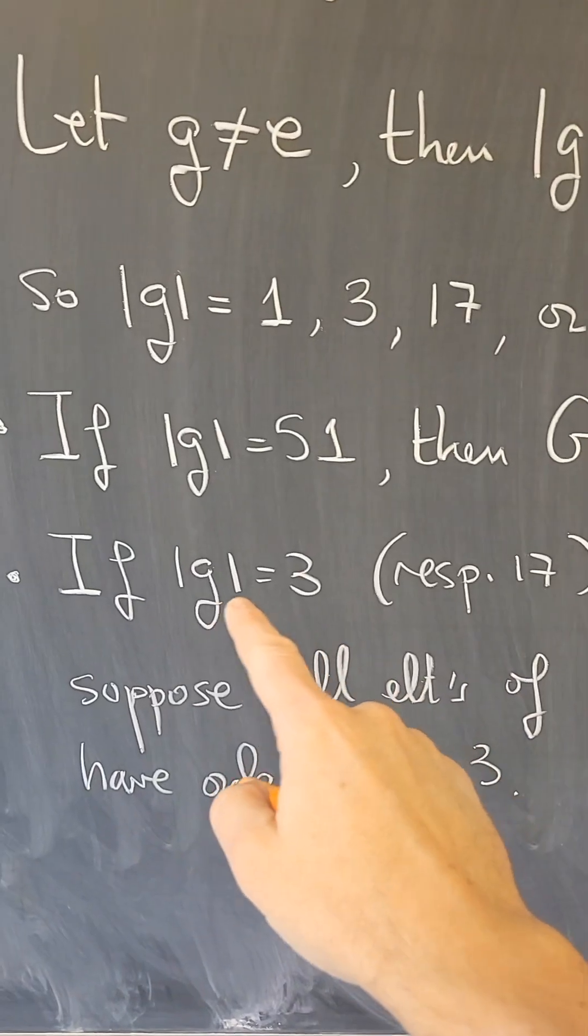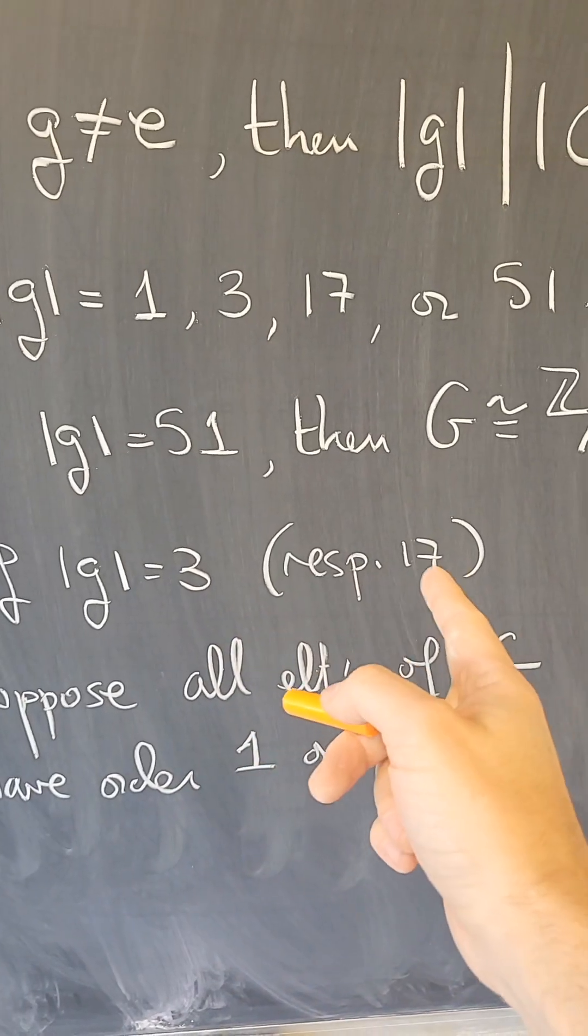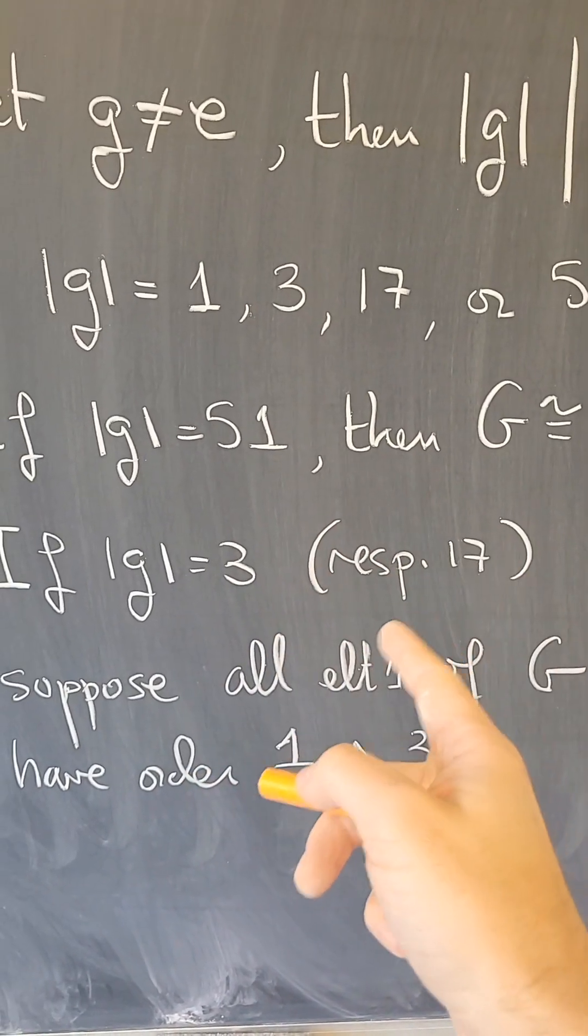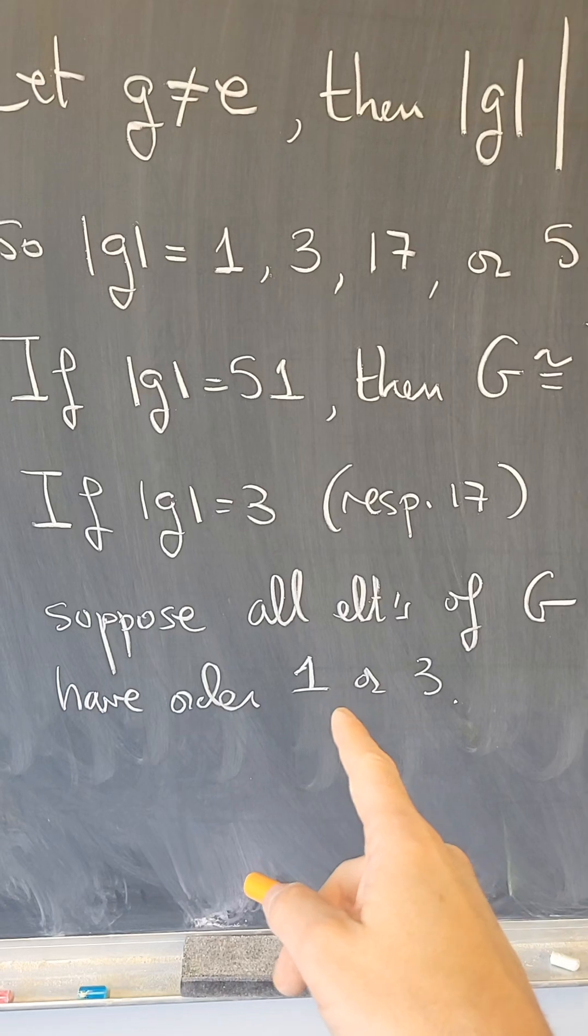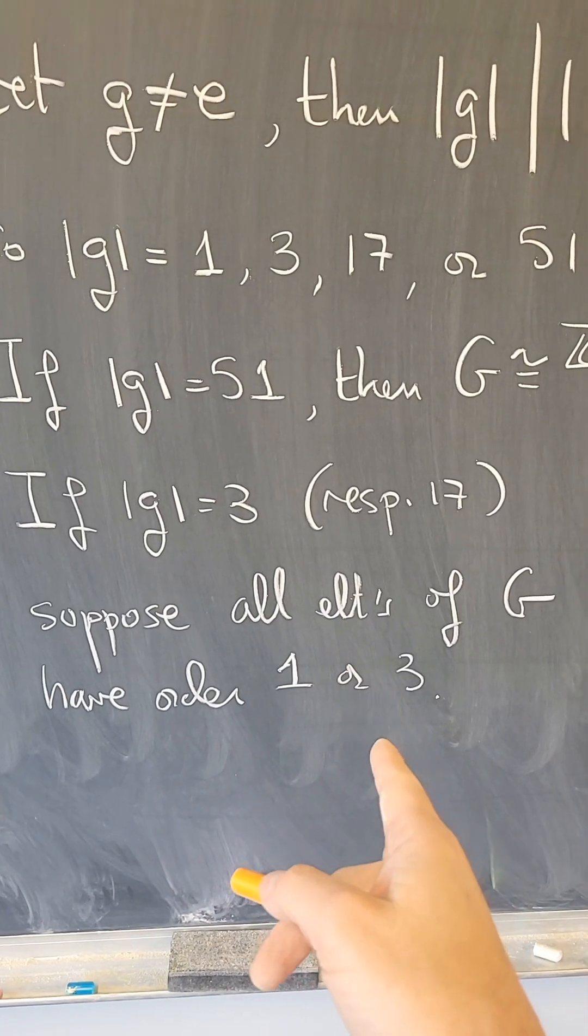So suppose g has order 3, or respectively order 17. The argument is the same. If g has order 3 and suppose that every element in G has order 1 or 3, then what happens?